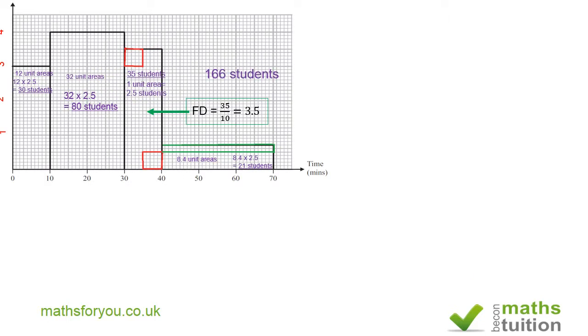Moving on to subsection B, it says that one of these students is to be chosen at random. Calculate the probability that this student took more than 30 minutes to travel to school. Right now we're looking for the number of students between 30 and 70. The probability that a student chosen would travel to school between 30 and 70 minutes.